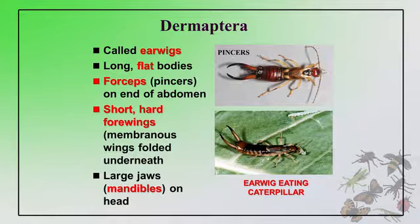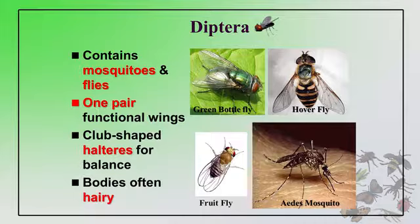Here is a photograph of an earwig eating a caterpillar. The next important order is Diptera, which includes flies, mosquitoes, gnats, and midges. Common Diptera contain mosquitoes and flies, one pair of functional wings, club-shaped halteres for balance, and bodies often hairy. Examples include green bottle fly, hover fly, Aedes mosquito, and fruit fly.